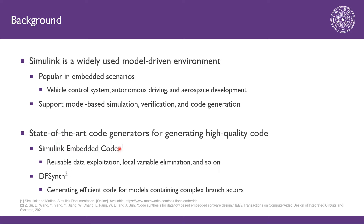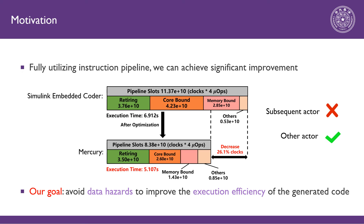State-of-the-art code generators employ high-level optimization to ensure the quality of the generated code, but they overlook the potential of low-level architecture, especially the instruction pipeline. Mercury focuses on fully utilizing data dependencies inside Simulink models to avoid instruction pipeline stalls. Therefore, we can achieve significant improvement on the generated code.